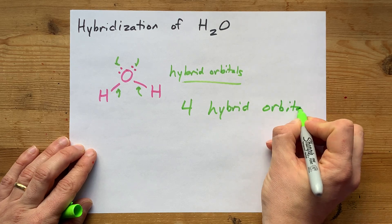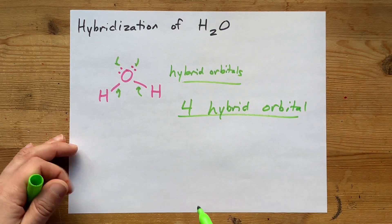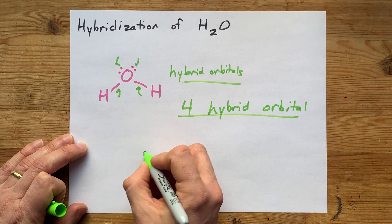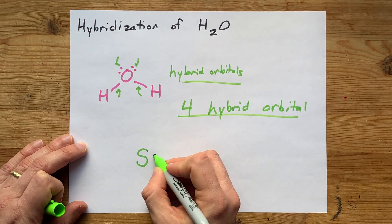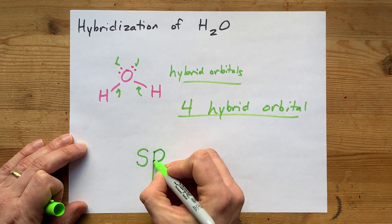How do you get four hybrid orbitals? Well, you're allowed to hybridize the S orbital that comes with an atom, and then you're allowed to hybridize up to three P's,